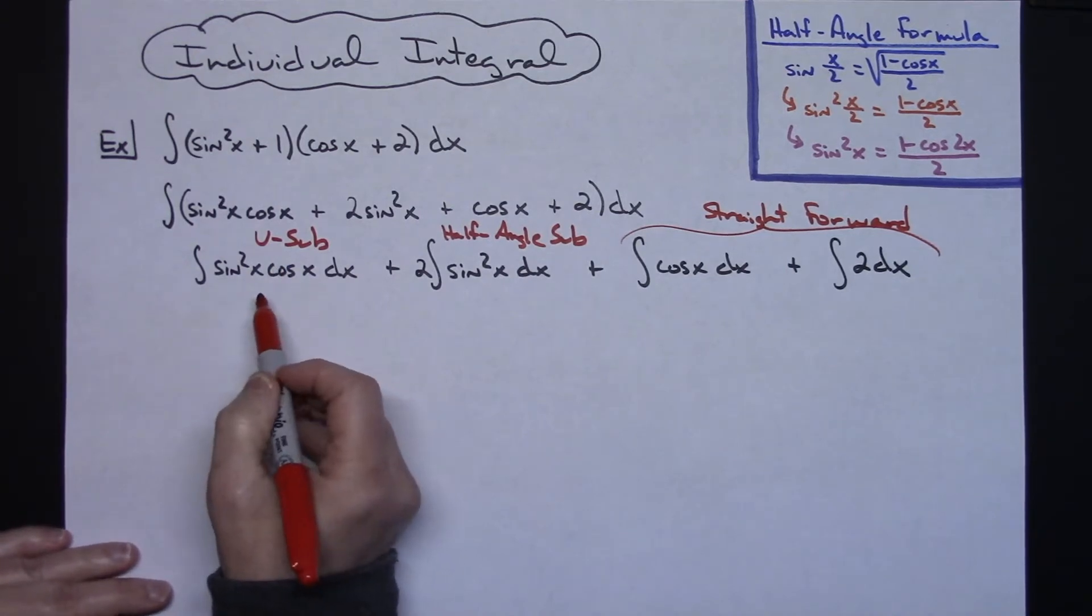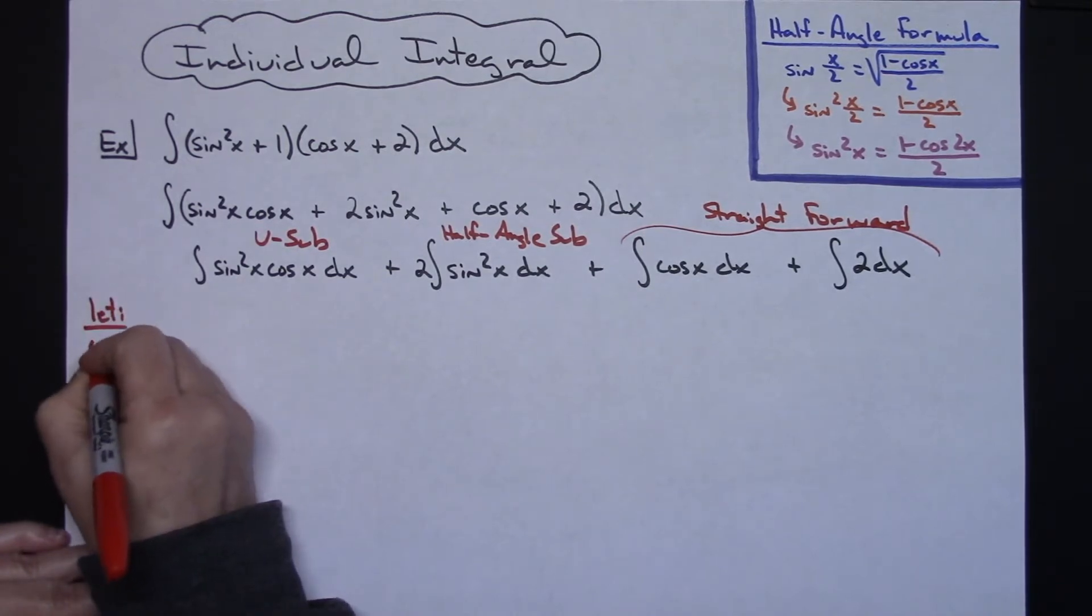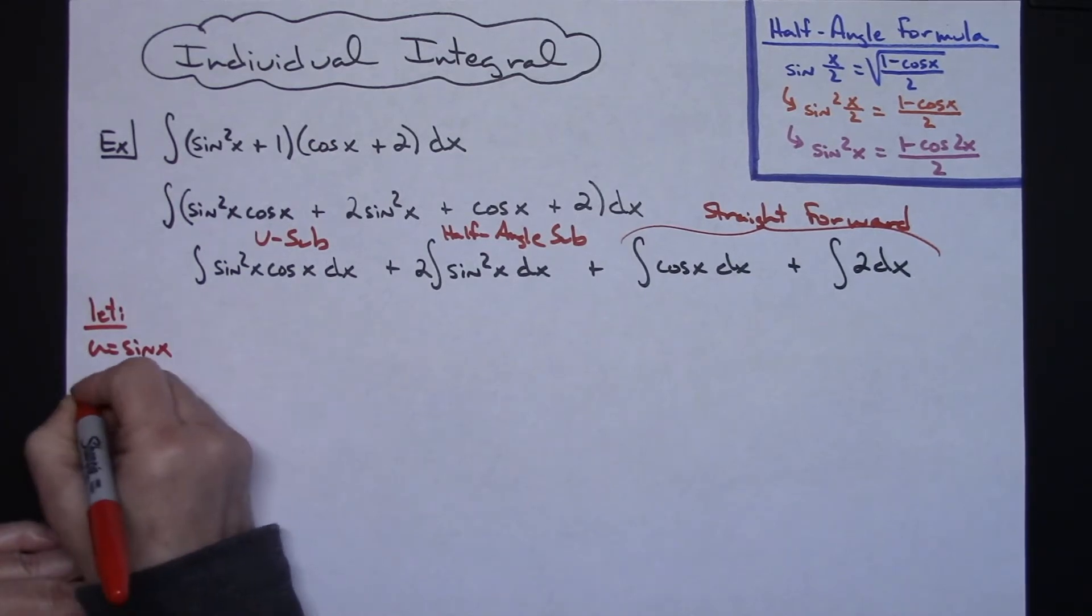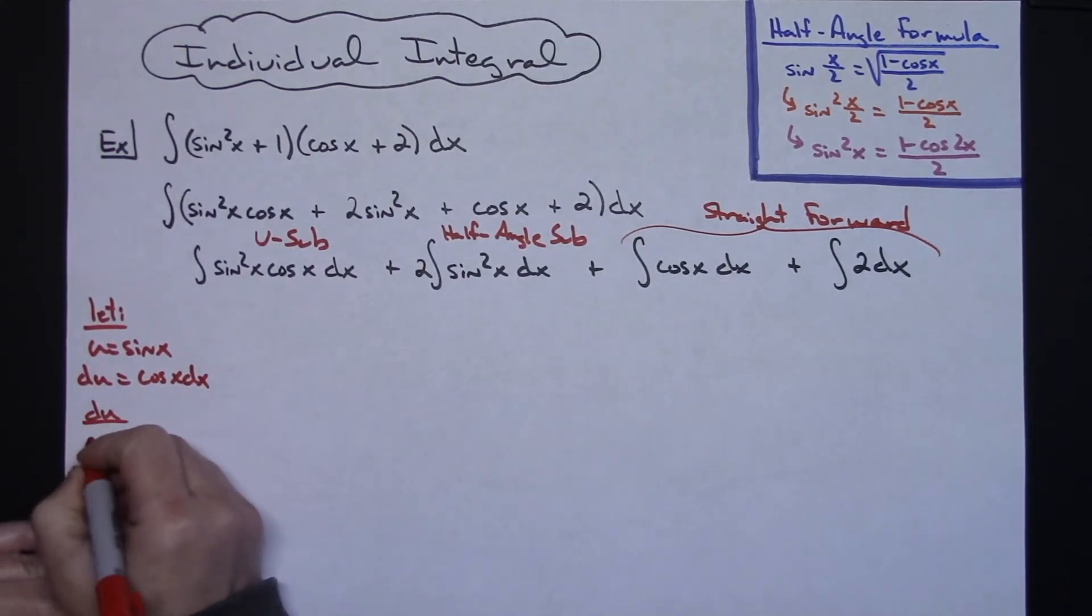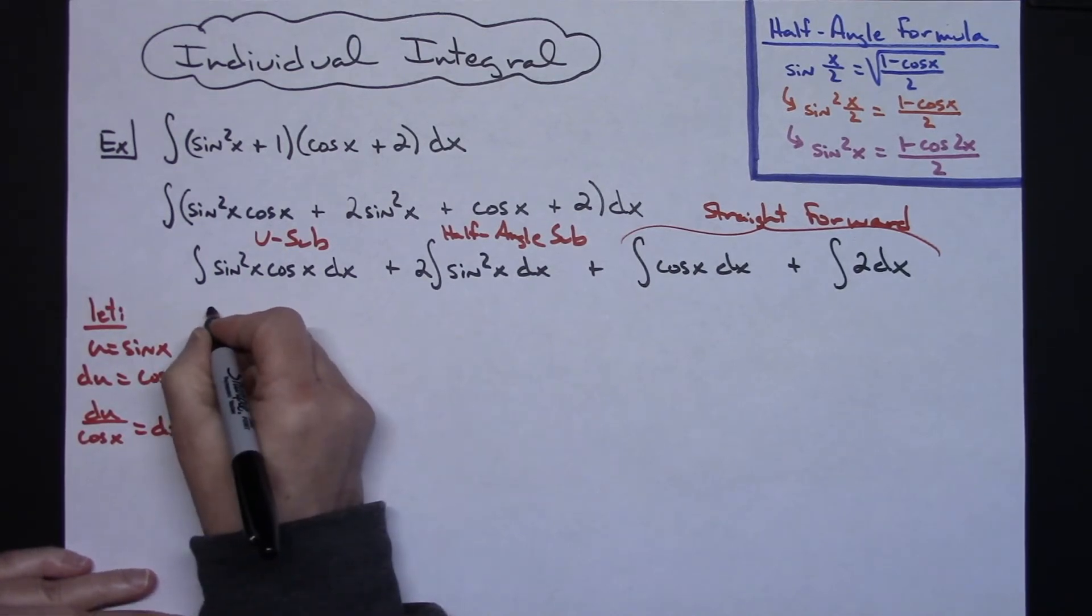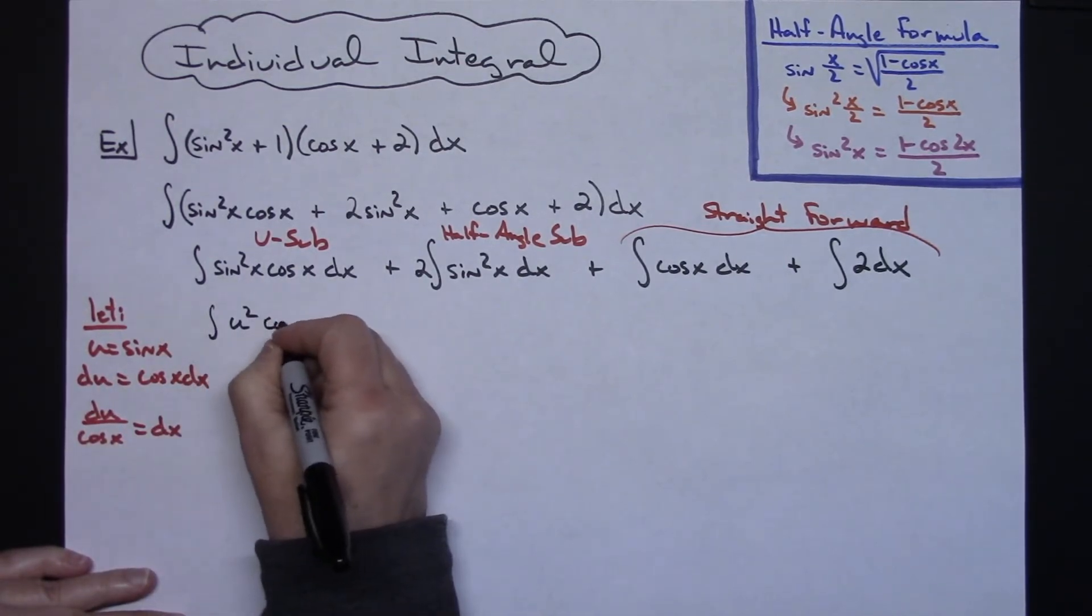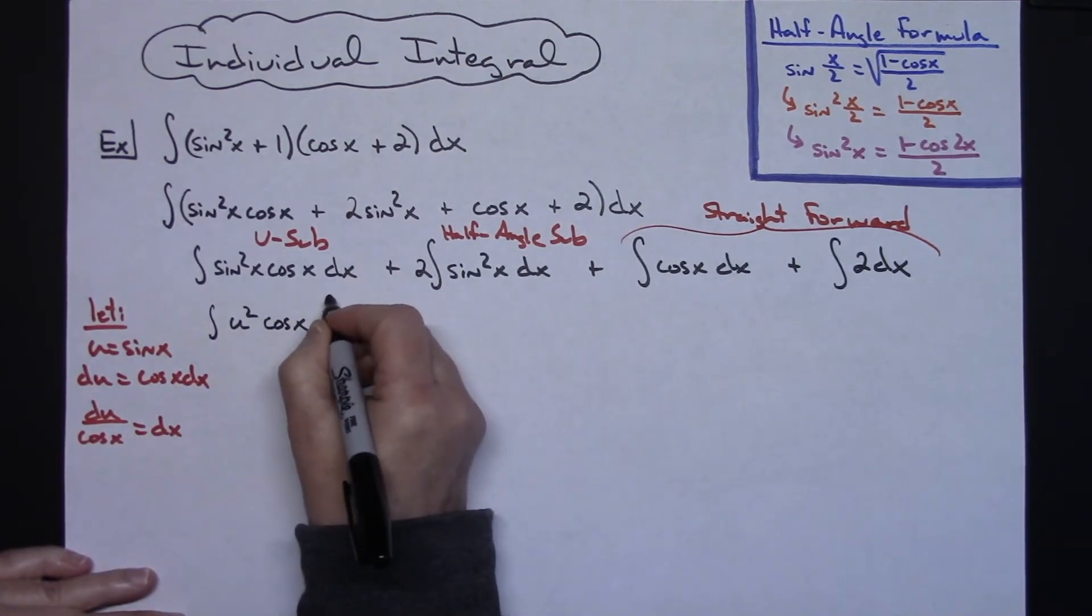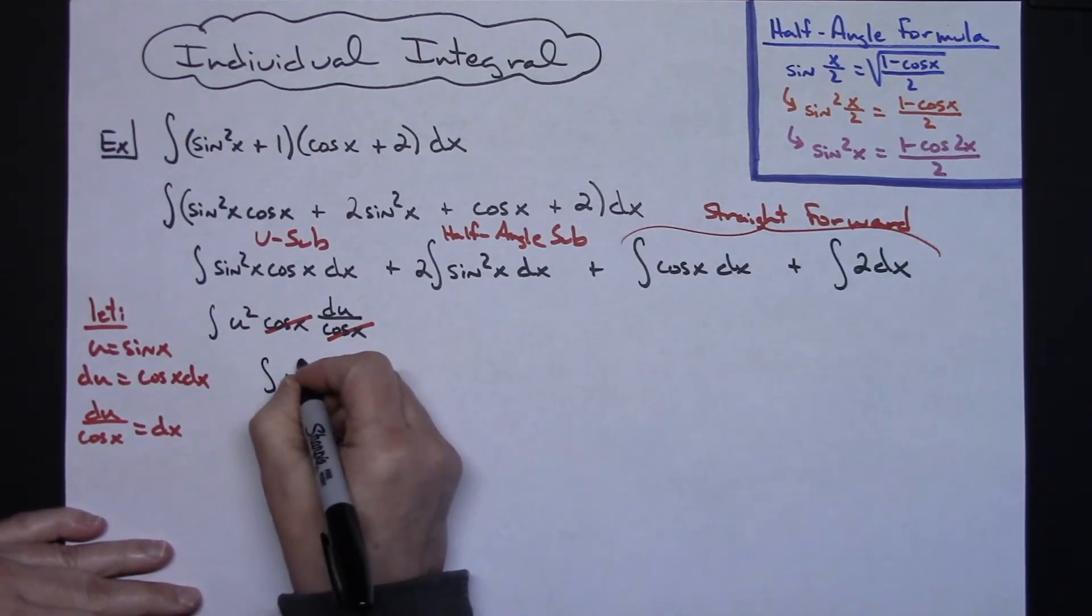Okay so for this u sub right here I'm going to let my u be sine x because that would be the inside function here. I've got a sine x quantity squared, inside function is sine x. So I'm going to let my u be sine x and then when I take the derivative of both sides I'll have du equals cosine x dx and if I solve for dx I'll have du over cosine x equaling that dx. So coming up here and showing some steps, I'm going to have the integral of u squared substituting that sine x there and then I'll have a cosine x. Substituting for the dx I'll have du over cosine x. That's going to set us up real nicely to cross those two cosines out which is then going to get this down to the integral of u squared du.